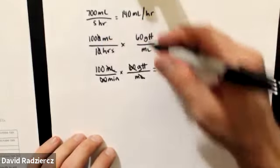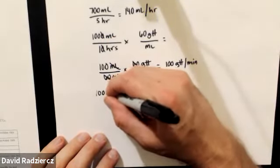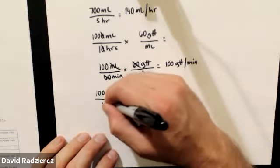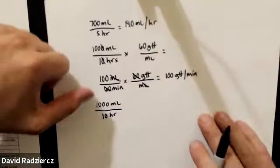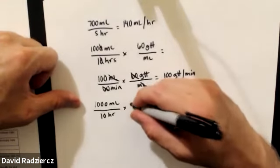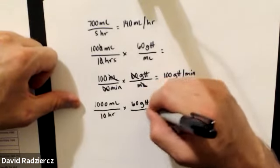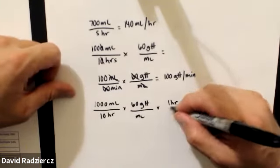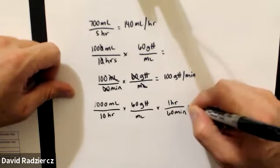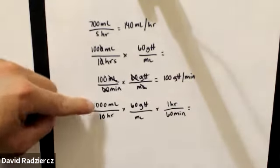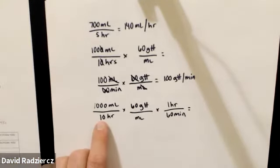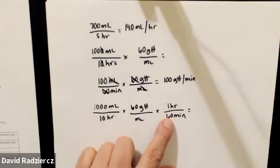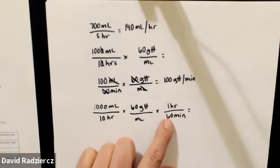If I was setting this up purely in dimensional analysis, you'd still put the drops per milliliter but need one other step: convert hours to minutes. 10 times 60 gives 600 minutes. Then reduce and you'll still be left with 100 drops per minute. If you're unsure how to reduce, just multiply across the top and divide by the numbers on the bottom.